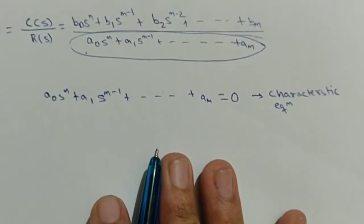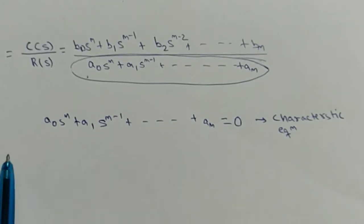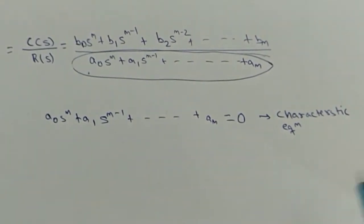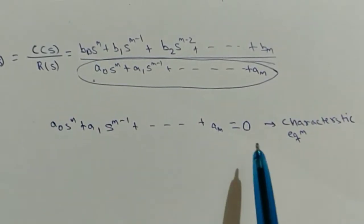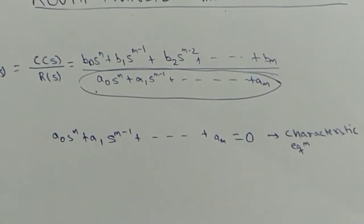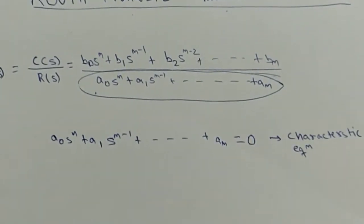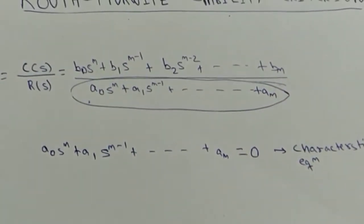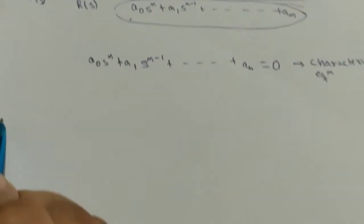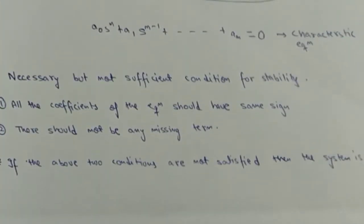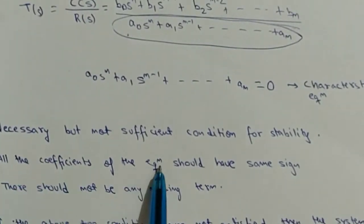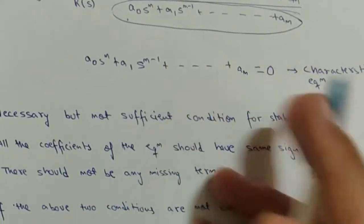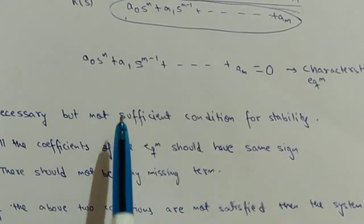After we have the characteristic equation, there are two conditions we check to see if the system is unstable or stable. These are necessary but not sufficient conditions for stability — they are a must for a system to be stable, but if satisfied, we are not completely sure the system is stable. The first condition is: all the coefficients of the equation should have the same sign — a0, a1, a2, a3, up to an should all be positive or all negative.